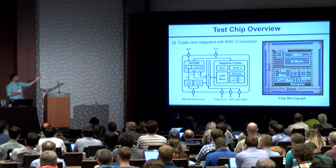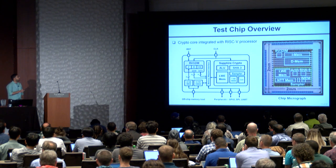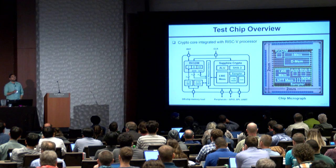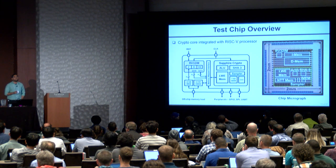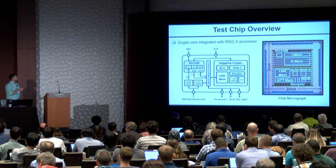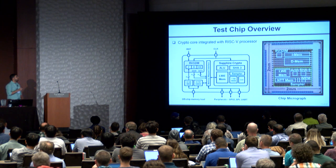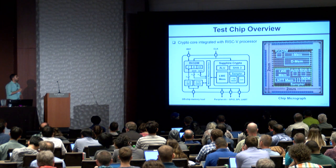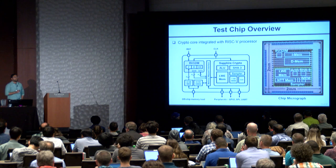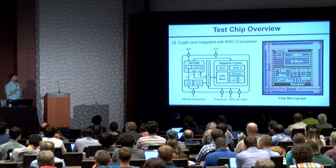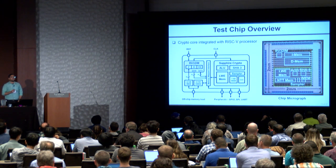We also show the chip micrograph of our implementation. Our chip was implemented in a 40-nanometer TSMC low-power process. The Sapphire crypto core occupies 106k logic gates and 40.25 kilobytes of SRAM, and the total crypto core area is 0.28 mm squared.